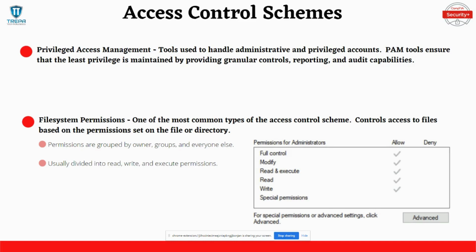File system permissions are a standard access control scheme that groups permissions by owner, group, and everyone else. In file system permissions, you can determine what level of access and control a group or individual can have on a specific file.